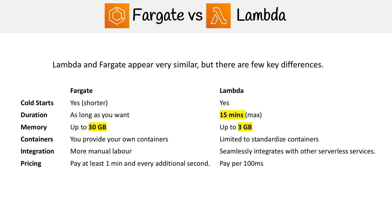I want to do a quick comparison between Fargate and Lambda because they're both serverless compute. They seem like they solve the same problem, but there are a few key differences, so we're just going to quickly walk through those.